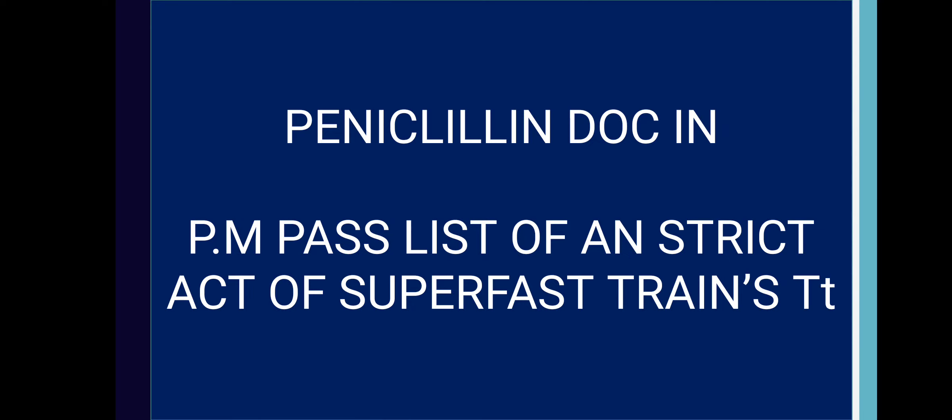The mnemonic for drugs of choice in penicillin is PM PASS LIST AN A STRICT ACT SUPER FAST T: PM = oxi — meningococcal meningitis; PASS = Pasteurella multocida; LIST = Listeria; AN = Anthrax; A STRICT = Streptococci; ACT = Actinomyces; SUPER FAST = Syphilis, trench fever; and small T = Tetanus.